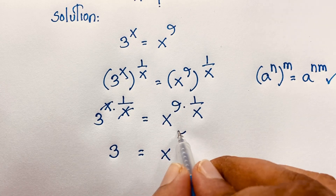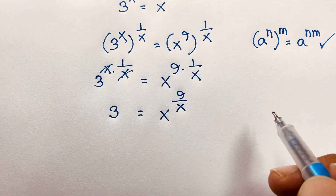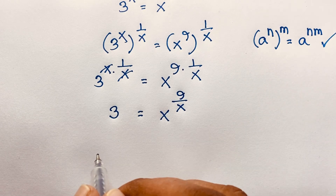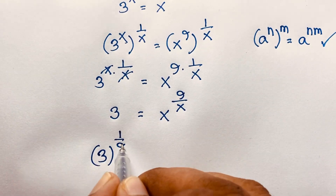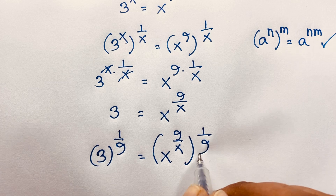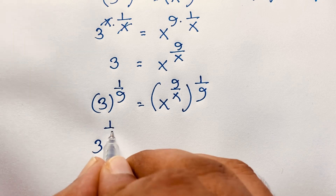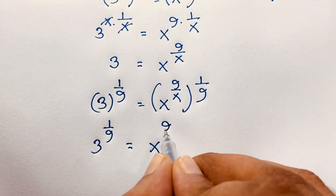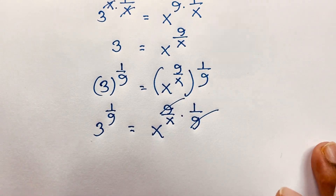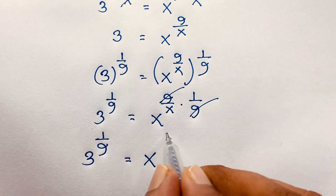On the right side, we get x to the power 9 over x. Now I apply exponent 1 over 9 to both sides to cancel the 9. This gives 3 to the power 1 over 9 on the left, and x to the power 9 over x times 1 over 9 on the right. The 9 cancels, leaving us with 3 to the power 1 over 9 is equal to x to the power 1 over x.